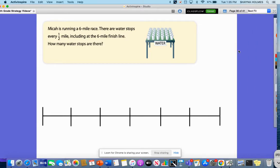It says Micah is running a six-mile race. There are water stops every one-half mile, including at the six-mile finish line. How many water stops are there?